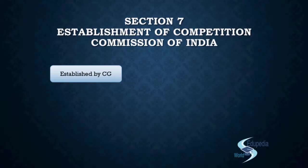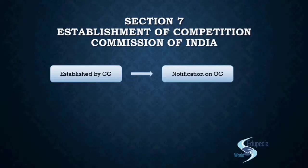The Competition Commission is also established by the Central Government. How does the Central Government communicate? The simplest way is by giving out a notification in the official gazette. So the Competition Commission is established by a notification in the official gazette, and the date of that notification will be the date of establishment of the Commission.